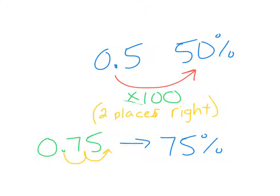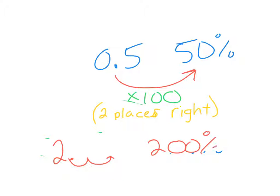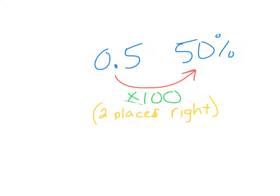Even if I gave you the whole number 2, technically there's a decimal right behind it. Moving that decimal two places to the right means that would be represented as 200%. Don't be thrown off if you ever go over 100 — that simply means more was done. If I got over 100 on a test, I probably did some extra credit. If a company made a 200% profit, it means they sold more than anticipated.